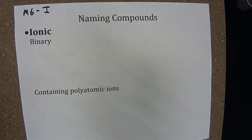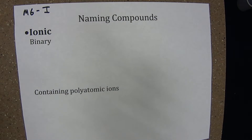Module 6 Introduction: Naming Compounds. Because there are over 30 million compounds known, a systematic method for naming them must be used. Different kinds of compounds are named by different rules. We'll explore a few of those rules in this module.